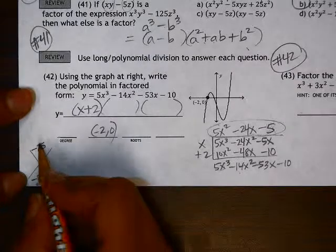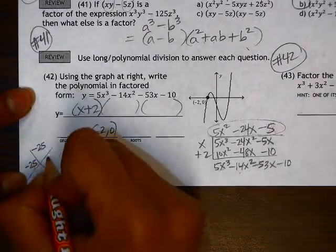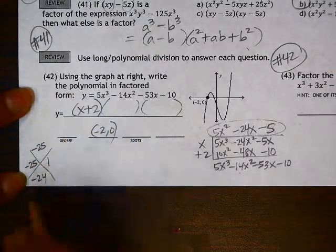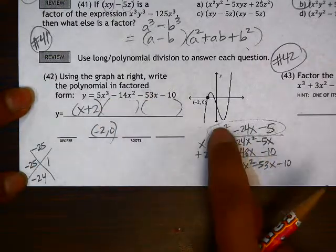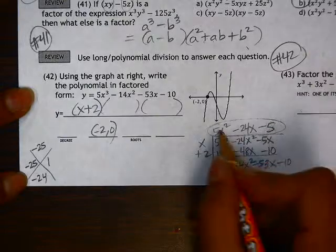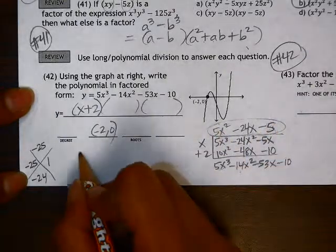Two numbers that multiply to negative 25 but add to negative 24 are these. Be careful not to do x minus 25x plus 1. Those are not the factors of this expression.